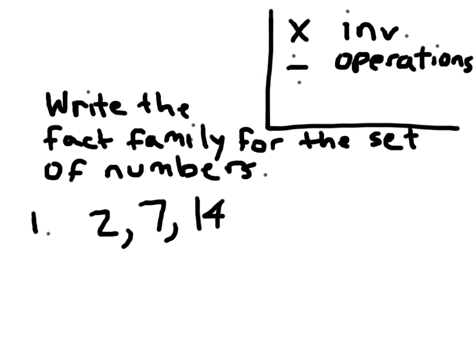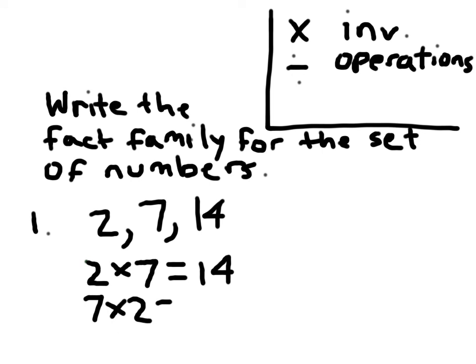You might have instructions like: write the fact family for the set of numbers. Just as addition and subtraction were inverse operations, multiplication and division are inverse operations. So we're trying to relate these numbers: 2, 7, and 14. We'll start with a multiplication fact — 2 times 7 does equal 14. If we reverse that, we have 7 times 2 equaling 14.